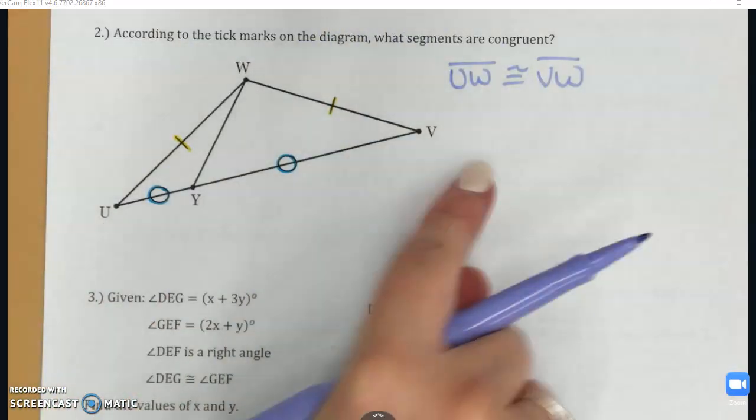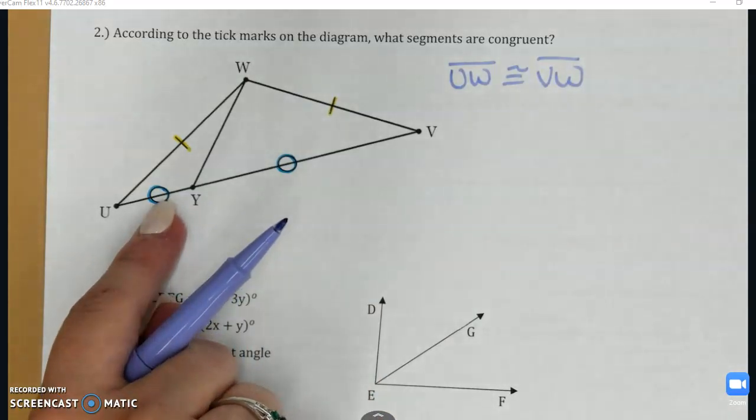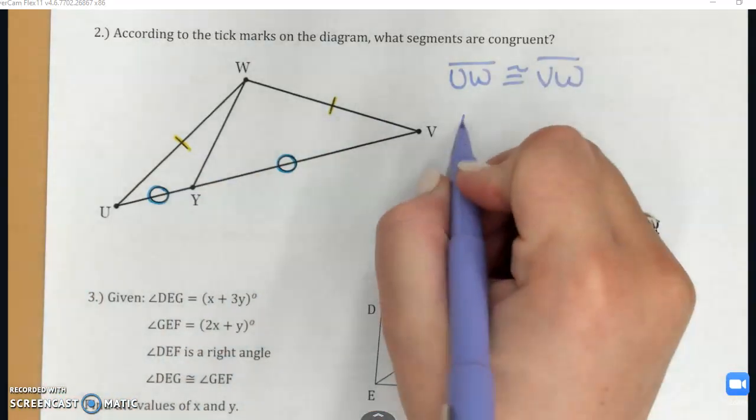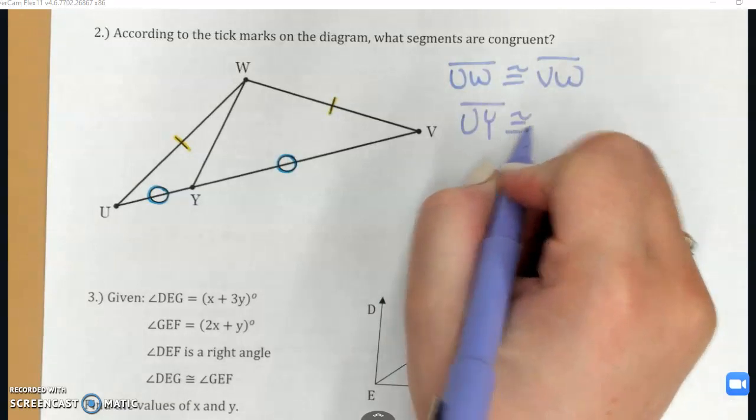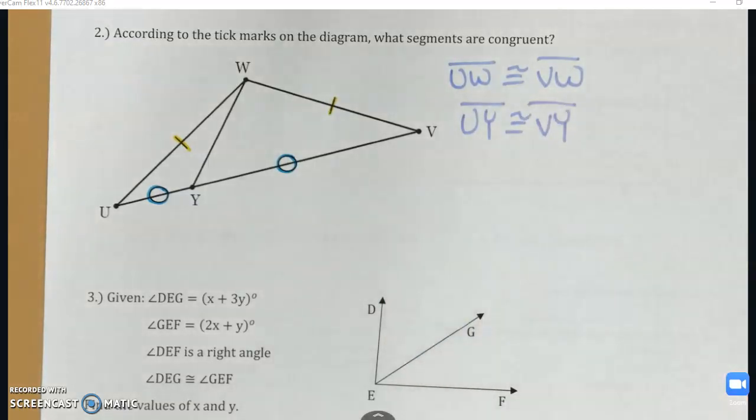When the diagram gives you markings like that, that is when it is safe to say, I've been told these are congruent, or if it would be in the words of the problem. Again, these two open circles are on UY and VY, and because they match, those two segments are also congruent. So again, if you had two ticks, three ticks, as long as they're matching, that is how you know that something's congruent.